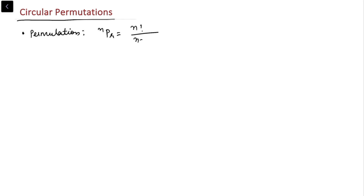In this video I'll be talking about circular permutation. In my last video we talked about permutation, generally referred to as row permutation. Before moving to circular permutation, one can see the definition of a permutation of n objects, where we use the formula nPr, equal to n factorial upon n minus r factorial. I derived this formula in my last video using the multiplicative principle.